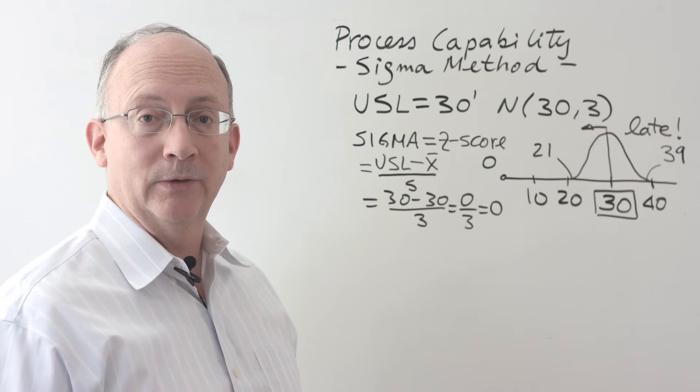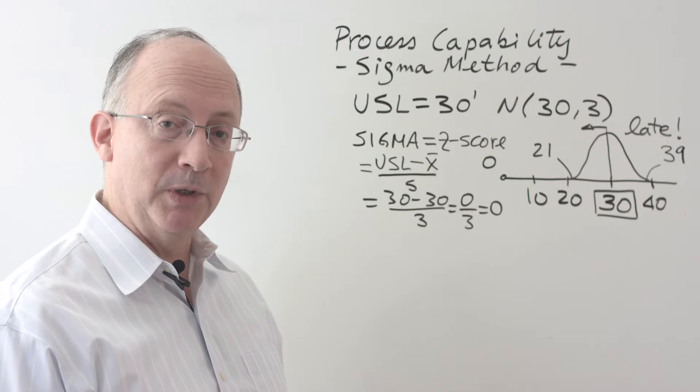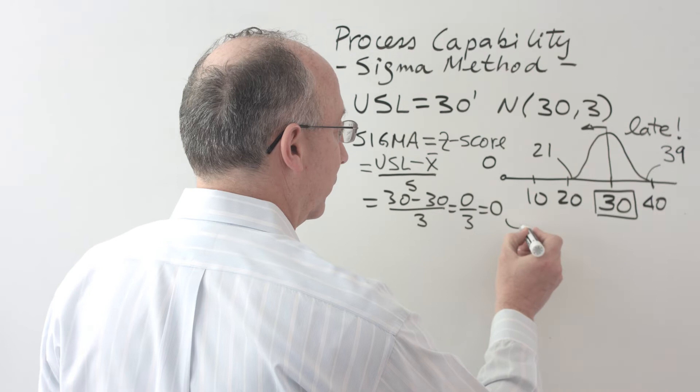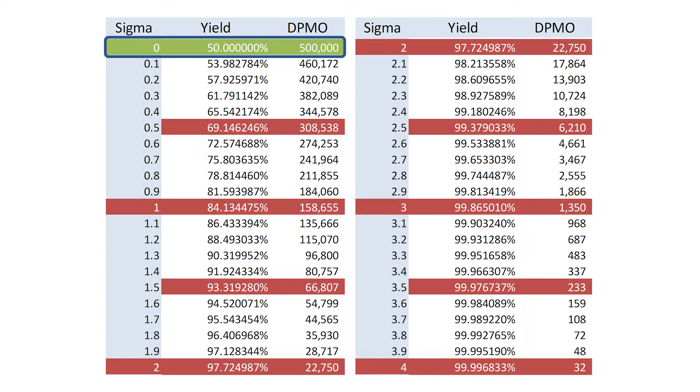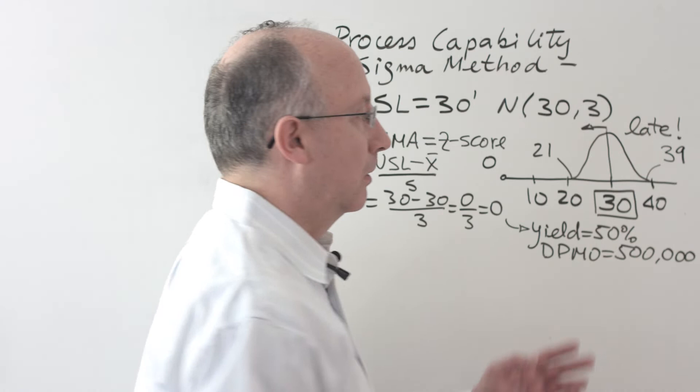If you go to any type of tables of sigma yield and defects per million opportunities, or DPMO, you will find the following numbers. For sigma of zero from tables, you will find that the yield is going to be equal to 50% and that DPMO is going to be equal to 500,000.